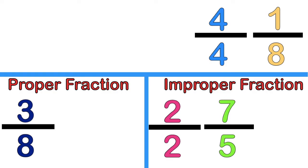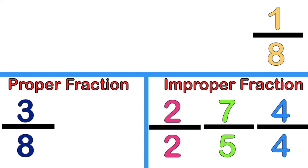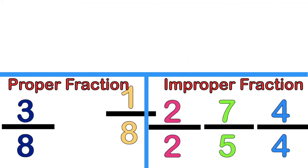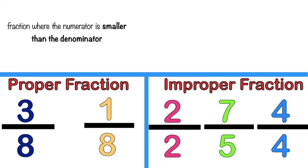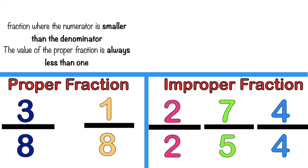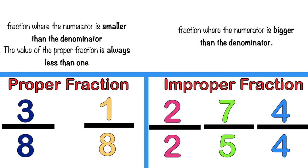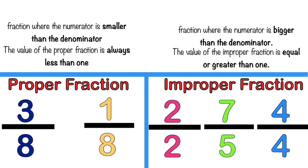How about 4 fourths? It is improper fraction, because 4 fourths is equal to 1. How about 1 eighth? Fantastic! It's proper fraction, because the numerator is smaller than the denominator. Again, children: when you say proper fraction, it is the fraction where the numerator is smaller than the denominator, and the value is always less than 1. While the improper fraction is the fraction where the numerator is bigger than the denominator, and the value is equal to or greater than 1.